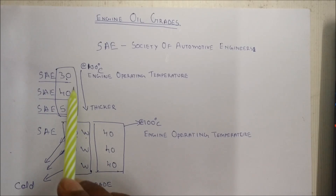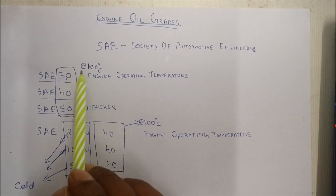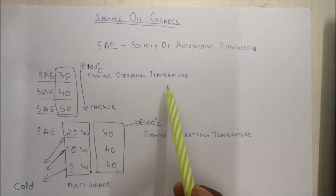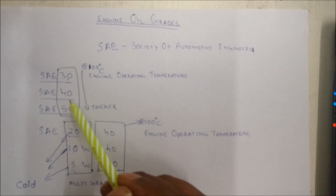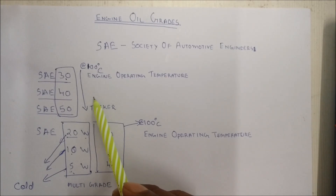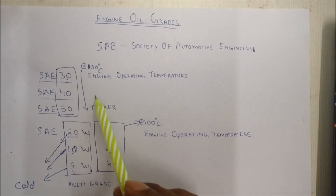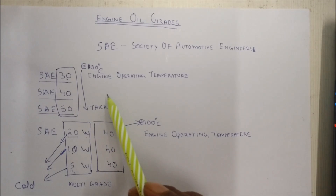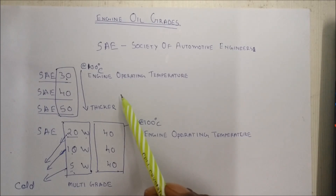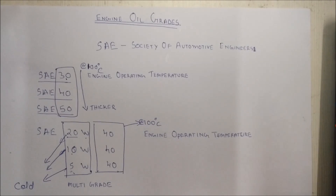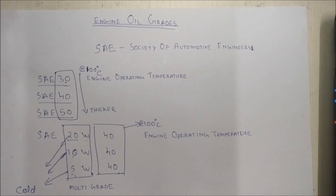These numbers represent the viscosity of an engine oil at 100 degrees Celsius, which is considered to be the engine's operating temperature. As these numbers increase, the thicker the engine oil is going to be, or the viscosity increases. Viscosity is nothing but the liquid's resistance towards flow — the higher the resistance, the higher the viscosity.